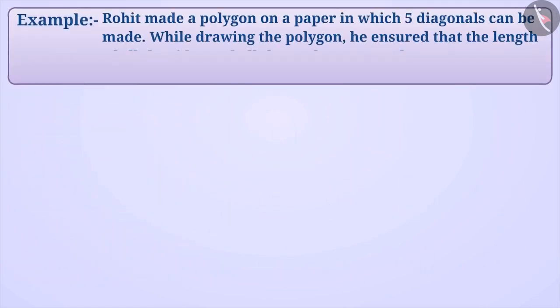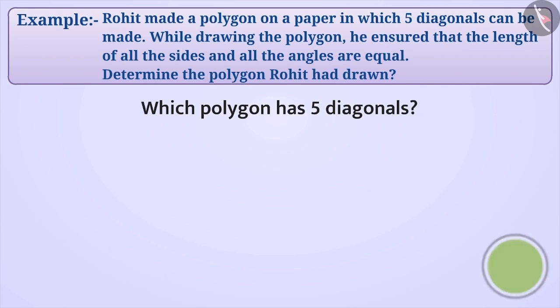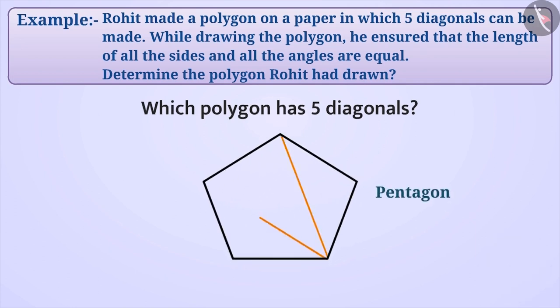Next example: Rohit made a polygon on a paper in which 5 diagonals can be made. While drawing the polygon, he ensured that the length of all sides and all the angles are equal. Determine the polygon Rohit had drawn. To solve this, first we have to find out which polygon has 5 diagonals. Can you tell? Think for a while. Let me tell you. In a pentagon, 5 diagonals can be drawn.